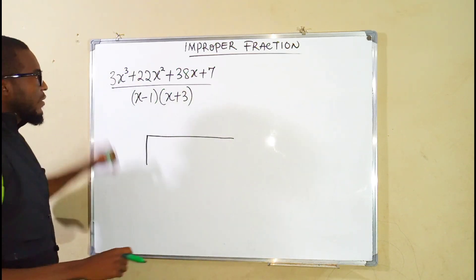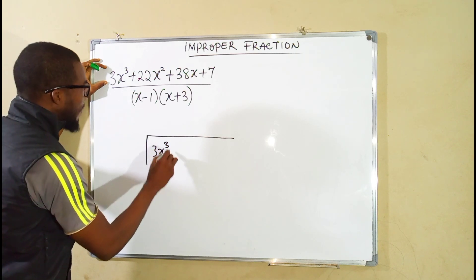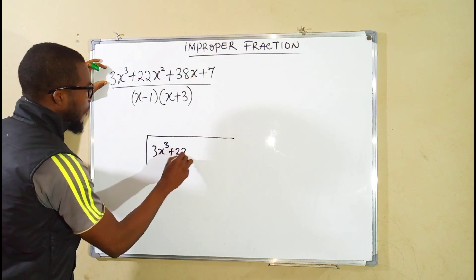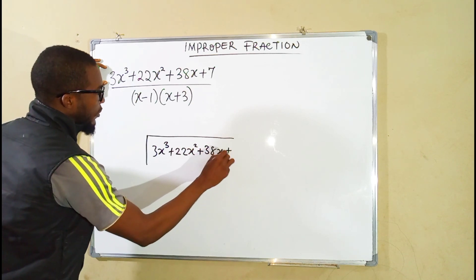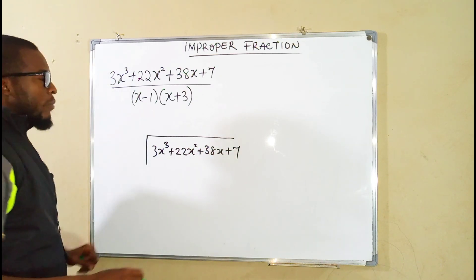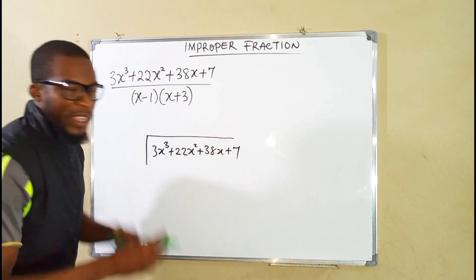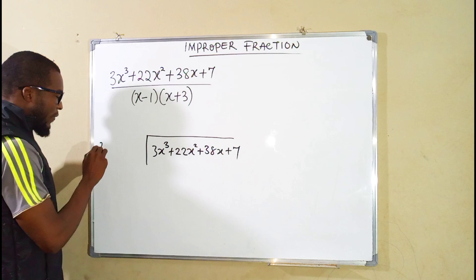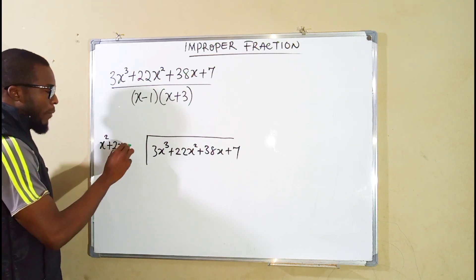Our dividend is going to be the numerator 3x cubed plus 22x squared plus 38x plus 7. And the divisor is going to be these factors but we have to expand them. We have x squared plus 2x minus 3.